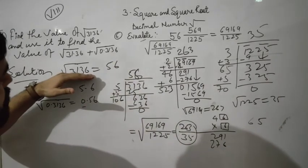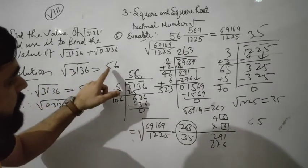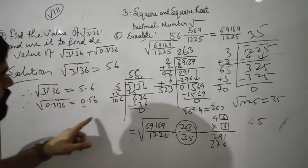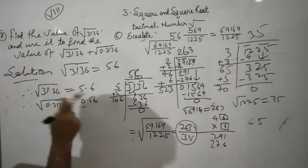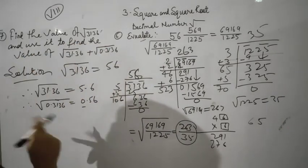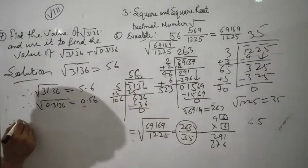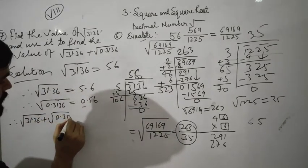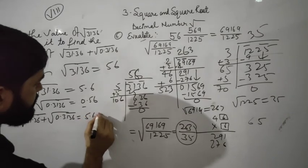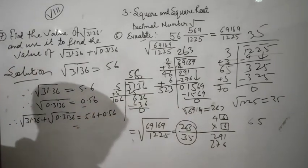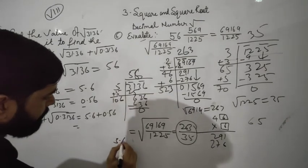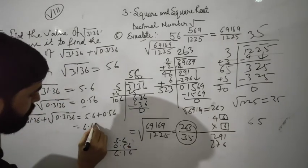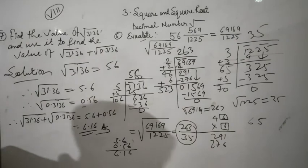Therefore, √31.36 equals 5.6, and √0.3136 equals 0.56. Now add them: 5.6 plus 0.56 equals 6.16. This is the answer to this question.